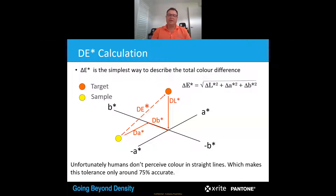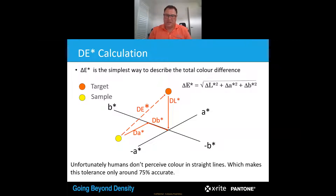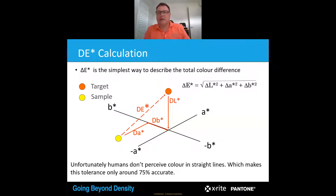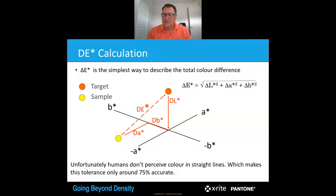That's because as human beings we don't see in straight lines. We're more forgiving with colour depending on the attribute that's changed. So if a colour is slightly lighter but the actual chroma and hue are correct, we're a lot more forgiving of accepting that colour. But if the chroma or hue shift while lightness is on target, we will reject it really quickly.